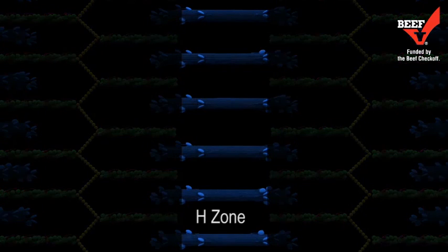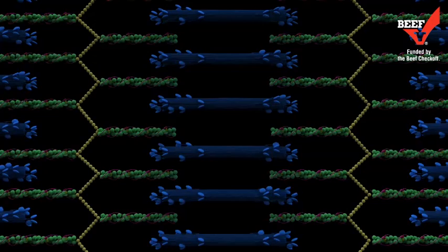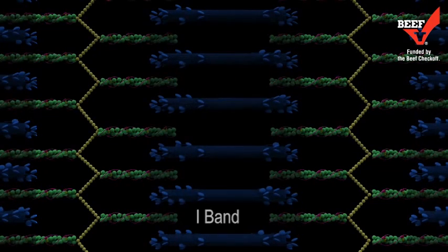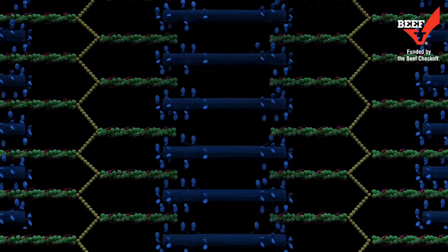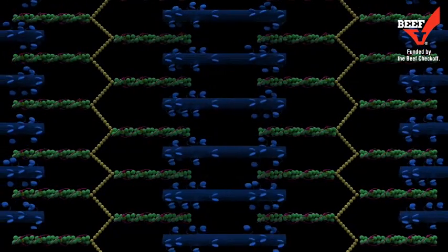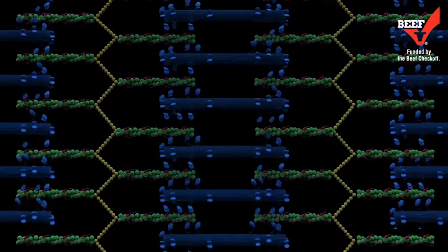The H-zone is solely comprised of thick filaments and the I-band of only thin filaments. Both the H-zone and the I-band are areas where thick and thin filaments do not overlap, causing their light appearance.